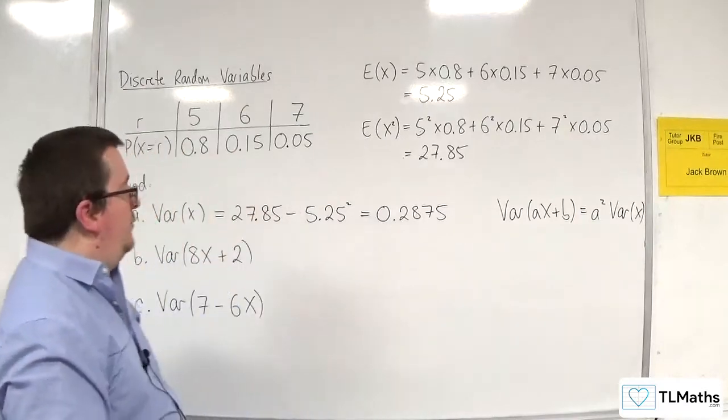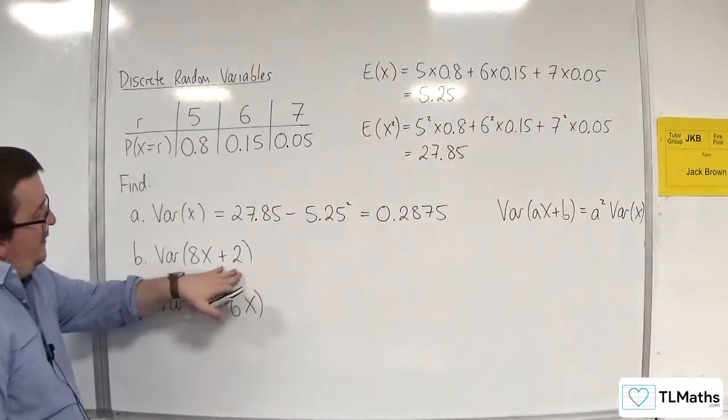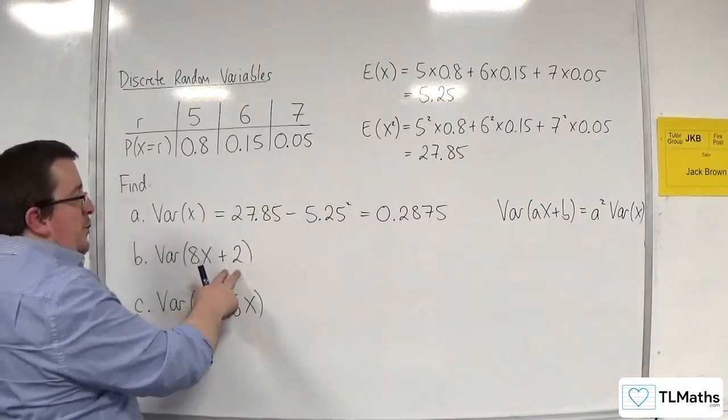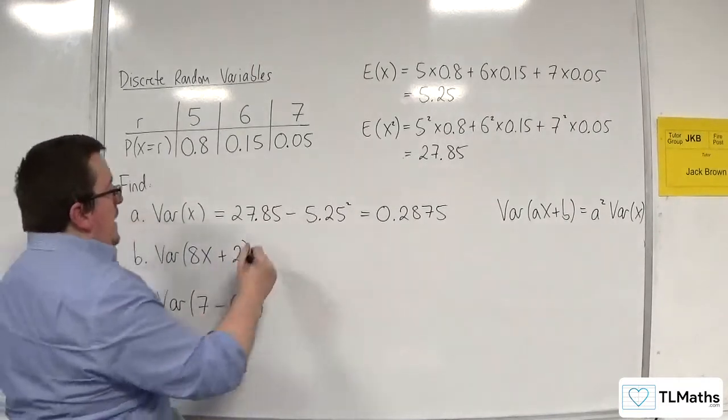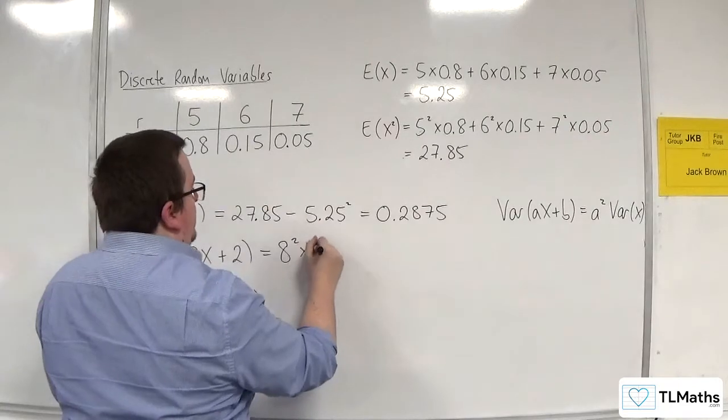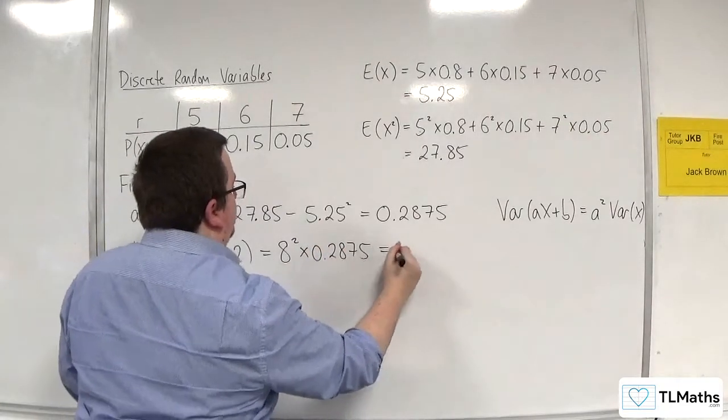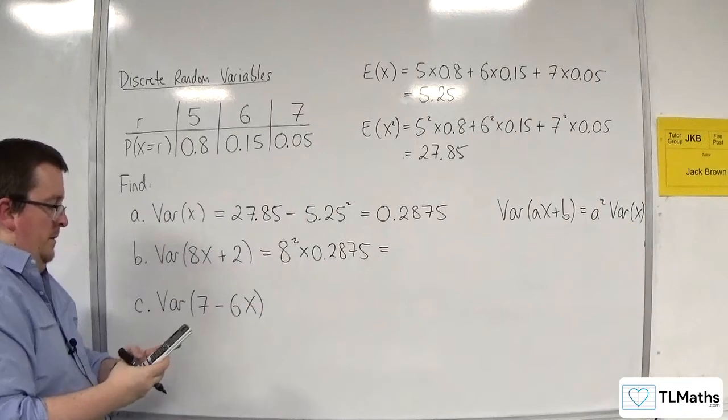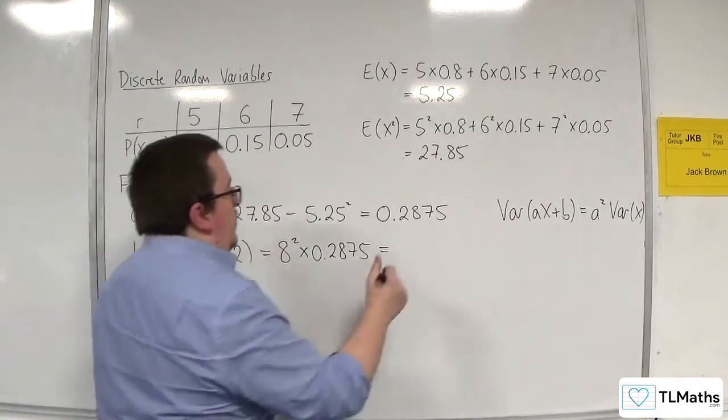So in this, we have plus 2, you can ignore that. And the 8 gets squared, so we'll have 8 squared times 0.2875. So we get 18.4.